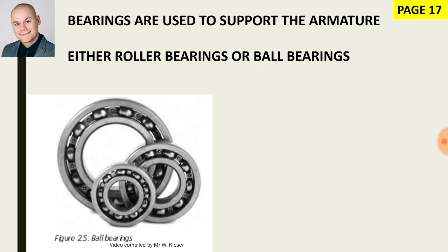The copper segments are wedge-shaped, which prevents the segments from moving apart due to centrifugal force. The main function of bearings is to prevent friction, and they are either made of roller bearings or ball bearings.